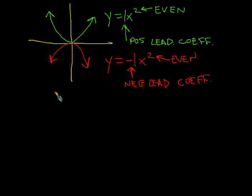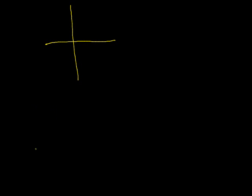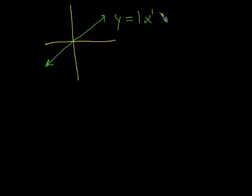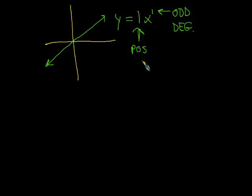Now let's take a look at odd degree polynomials. For odd degree polynomials, our model is the positive sloping line. If we have y equals 1 times x to the power of 1, this is known as a first degree polynomial because of the 1, and since 1 is an odd number, we also call it an odd degree polynomial. Since it has a positive leading coefficient — what we used to know as slope — we get this positive sloping line.